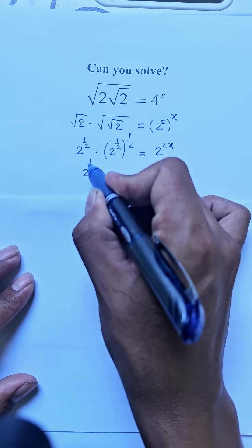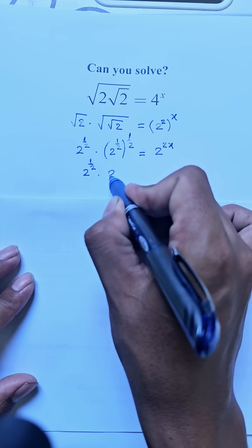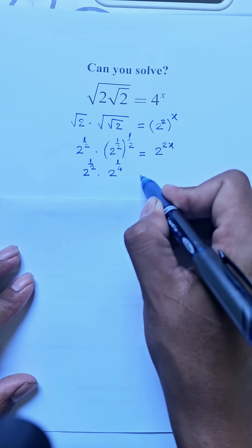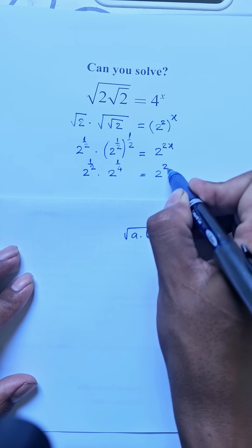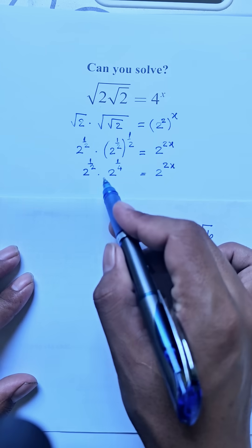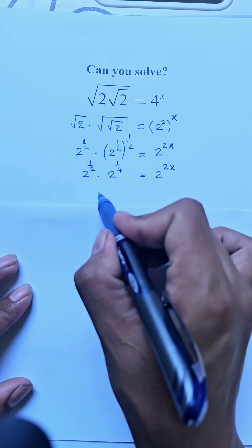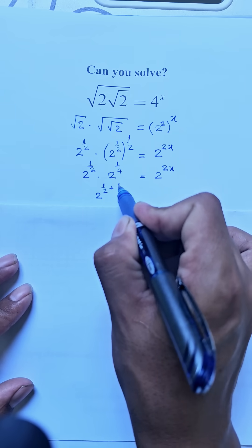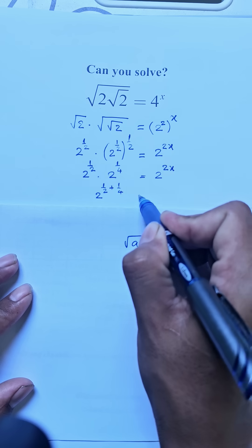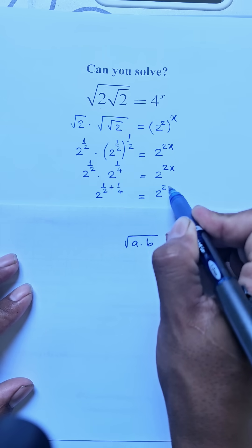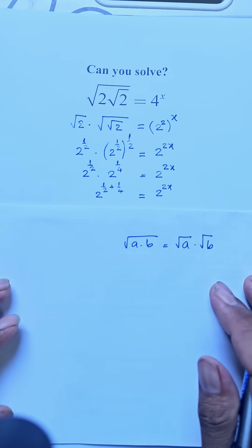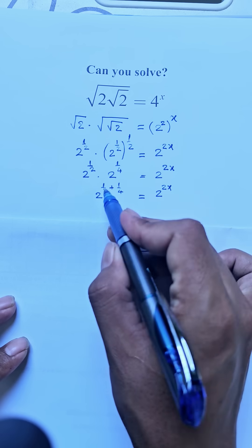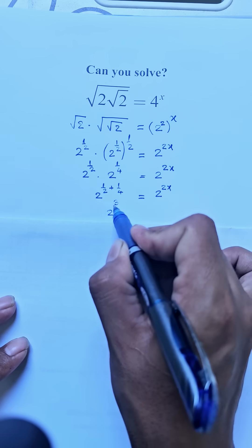We get 2 to the power 1/2 times 2 to the power 1/4, equal to 2 to the power 2a. Here we get 2 to the power (1/2 plus 1/4), equal to 2 to the power 2a. Then we get 2 to the power 3/4, equal to 2 to the power 2a.